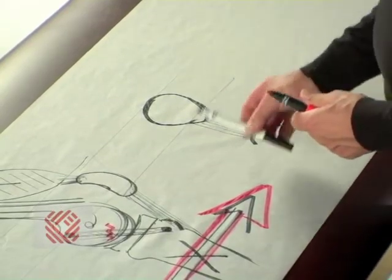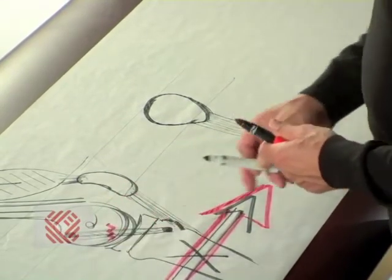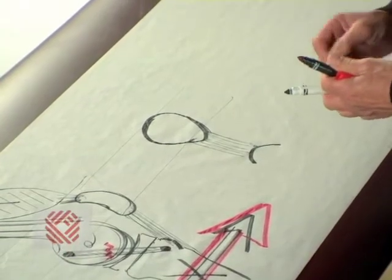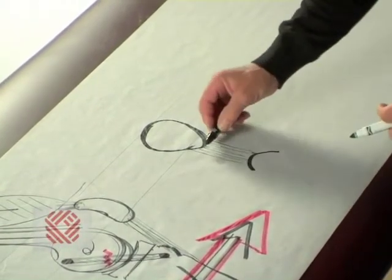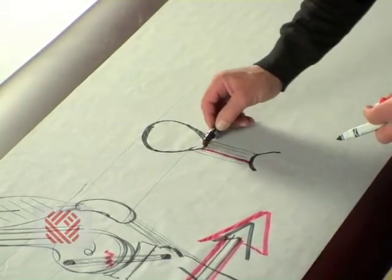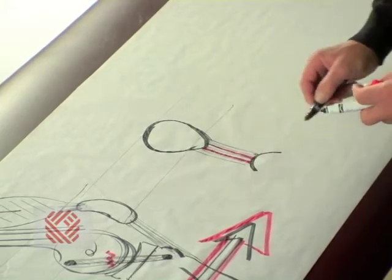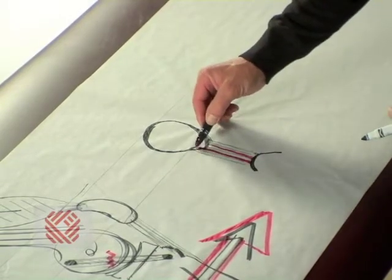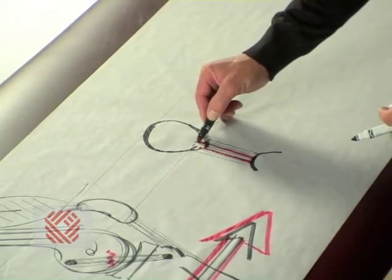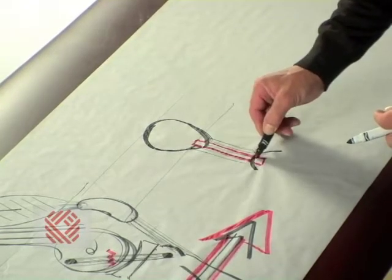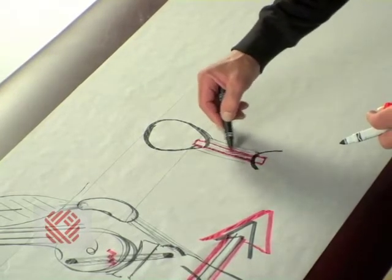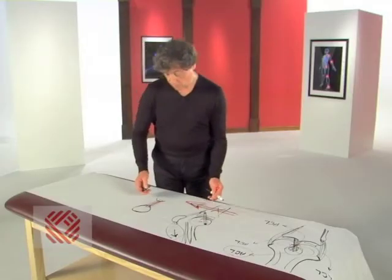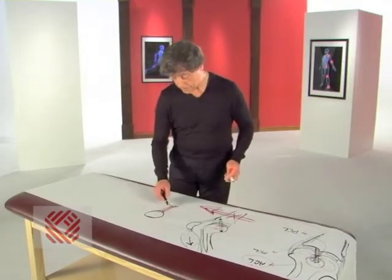What we would use to replace this anterior cruciate ligament would be the middle portion of this patellar tendon with a little piece of bone on this end and a little piece of bone on this end. So if we take that piece out,